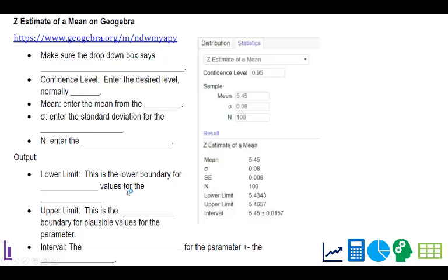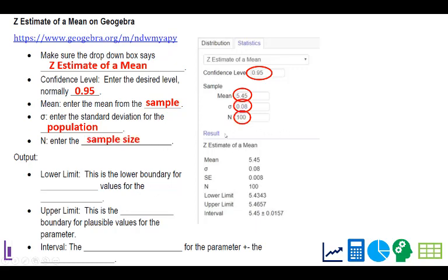Now, you also have an easy way to calculate estimates for a mean or a confidence interval using GeoGebra. If you use the link right here, first of all, make sure this dropdown box says Z estimate of a mean. Then you'll see this box for confidence level, enter the desired level, and it's almost always 95%, but it can change depending on the problem. The mean, enter the mean from the sample. Because we don't know the population mean, we're trying to estimate it. And then enter the standard deviation for the population. They're going to give you this in this problem. For n, enter the sample size.